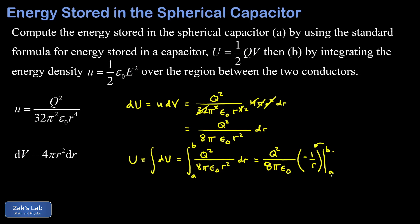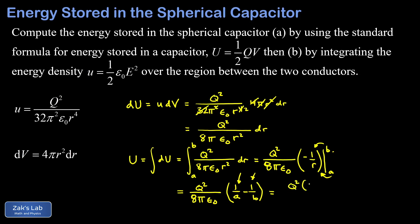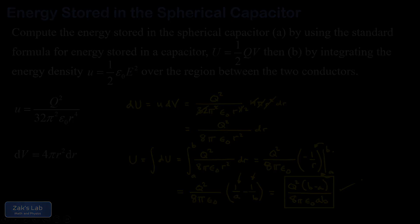Subtracting what we get at the lower limit gives +1/a, so we write U = Q² / (8πε₀) × (1/a − 1/b). Getting a common denominator — multiplying the first fraction by b/b and the second by a/a — gives (b − a) in the numerator, so U = Q²(b − a) / (8πε₀ab). This is exactly the same answer we got using the standard capacitor energy formula, confirming our result.